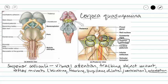Our superior colliculi are in charge of visual orientation reflexes. If you see something move out of the corner of your eye, you will turn your eyes to look at it. Or if somebody walks into the room, you will move your head and eyes to see who that new person is. You don't think about doing this — it's a reflex controlled by your superior colliculi.